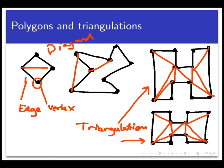One of the things to notice is that a polygon can be triangulated in more than one way. Here's an example of two different triangulations of the same polygon.